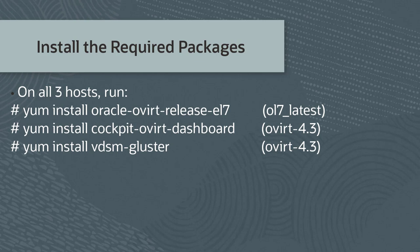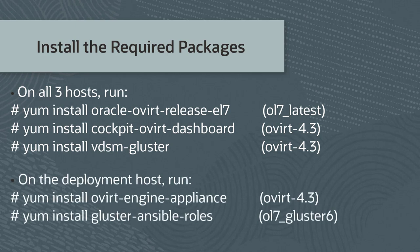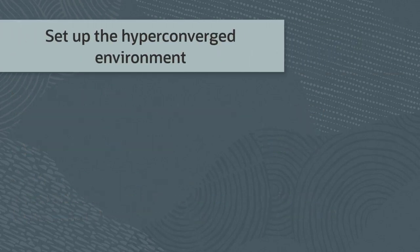Both the cockpit-overt-dashboard package and the vdsm-gluster package are provided by the overt-4.3 YUM repository. On the deployment host only, install the following packages: overt-engine-appliance for the engine virtual machine installation, provided by the overt-4.3 YUM repository; and gluster-ansible-roles for deploying, configuring, and maintaining GlusterFS clusters, provided by the ol7-gluster6 YUM repository.